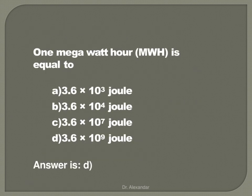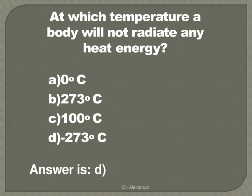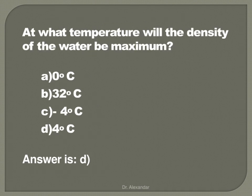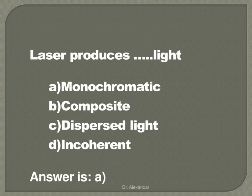1 megawatt hour is equal to 3.6 times 10 to the power 9 joules. At which temperature will a body not radiate any heat energy? That is minus 273 degrees Celsius. At what temperature will the density of water be maximum? That is 4 degrees Celsius. A laser produces monochromatic light.